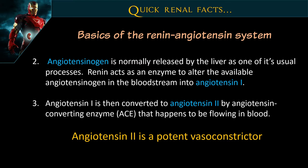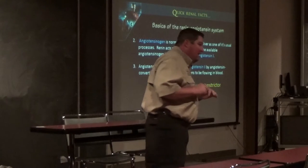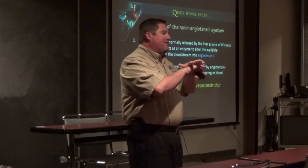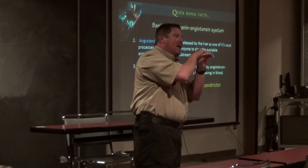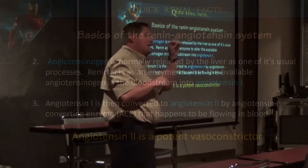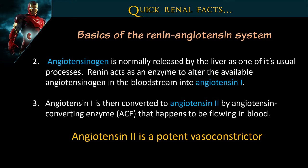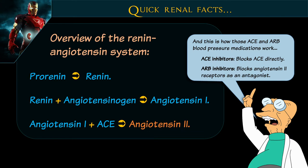Once angiotensin I is formed, it converts to angiotensin II — this is where angiotensin converting enzyme (ACE) comes into play. We give enalapril on the ambulance to block CHF patients from closing down after we've blown them open with nitroglycerin. The ACE inhibitor puts a block there and says those vessels aren't going to squeeze. Angiotensin II is a very potent vasoconstrictor — the kidneys say they need more flow, so everything squeezes tight to push blood where it's needed, similar to how epinephrine works during a code.